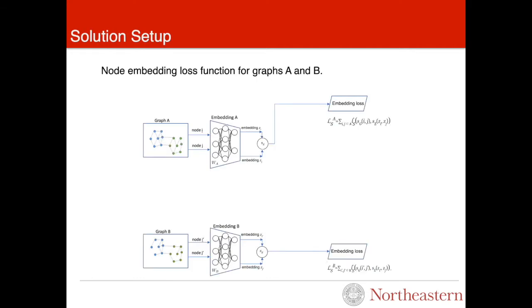In our model, we train node embeddings jointly. There is a neural network parameterized by weights WA and a neural network parameterized by weights WB. One of them takes graph A and produces the embeddings. The other one takes graph B and produces node embeddings. Node embeddings loss functions for graph A and B are functions of topological similarity and embedding similarity of nodes.